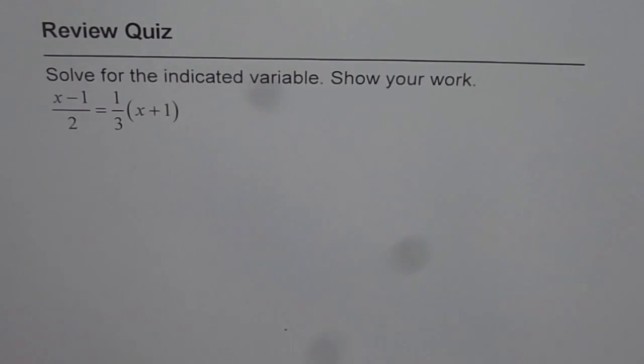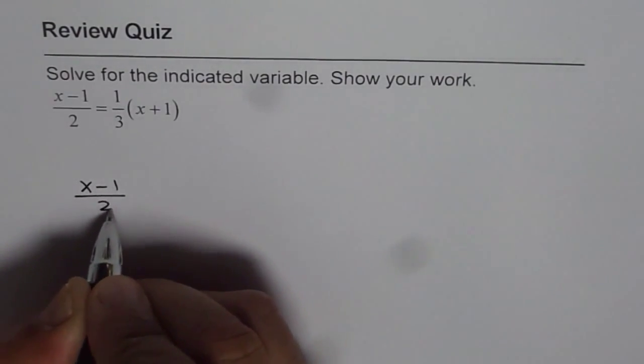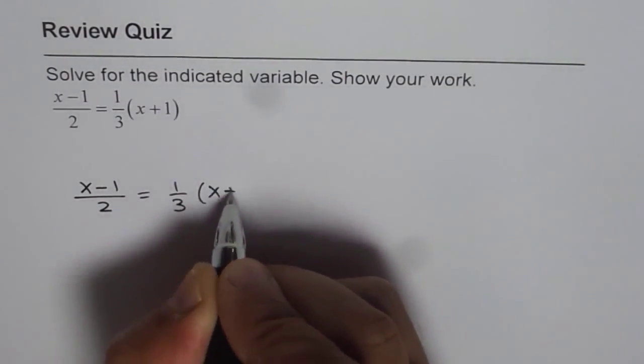The first step is multiply by the lowest common denominator so that you get an expression which does not have any fractions. So let us rewrite this. We have x minus 1 over 2 equals to 1 over 3 times x plus 1.